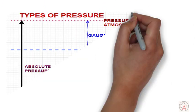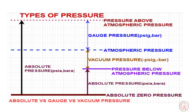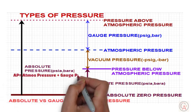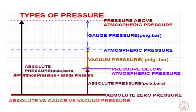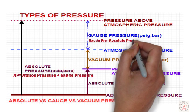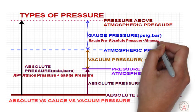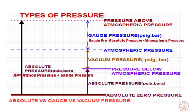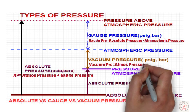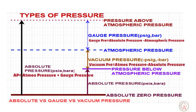As you can see, absolute pressure is calculated as: absolute pressure = atmospheric pressure + gauge pressure. And gauge pressure = absolute pressure − atmospheric pressure. Last but not least, vacuum pressure = atmospheric pressure − absolute pressure.